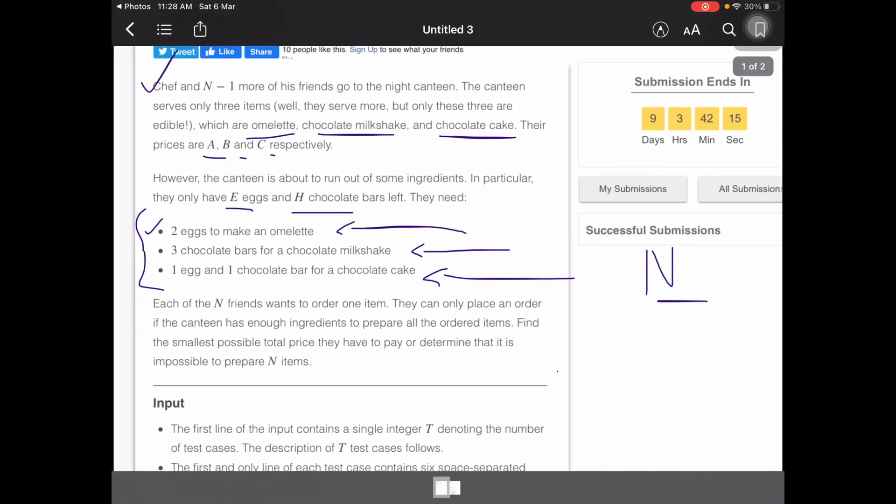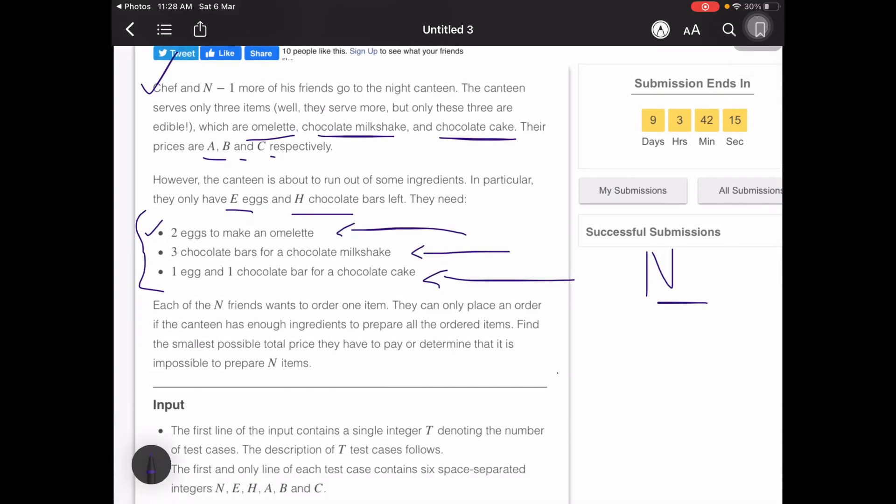What we need to find is the minimum price - remember the prices of each item were given as A, B, and C. We need to find a total minimum price such that n friends are able to order items and the price is also minimum.